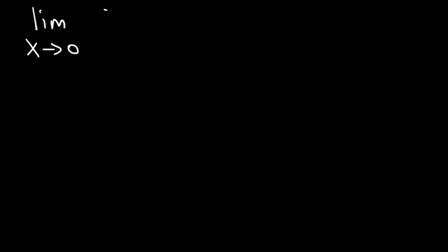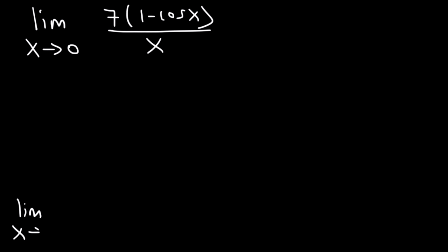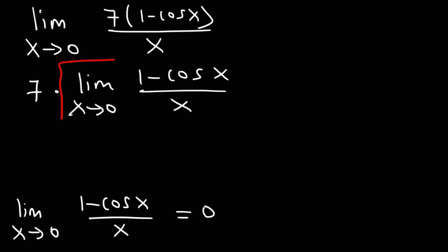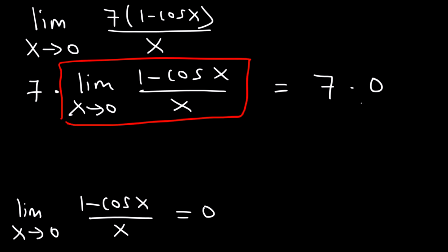What is the limit as x approaches 0 of 7 times 1 minus cosine x divided by x? Recall that the limit as x approaches 0 of 1 minus cosine x divided by x equals 0. To show our work, we separate 7 from everything else — this portion equals 0 — so the answer is 7 times 0, which is 0.